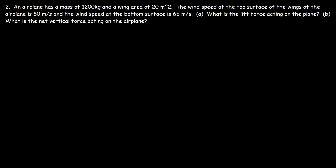Problem two: an airplane has a mass of 1,200 kilograms and a wing area of 20 square meters. The wind speed at the top surface of the wings is 80 meters per second, and the wind speed at the bottom surface is 65 meters per second. What is the lift force acting on the plane, and what is the net vertical force acting on it?